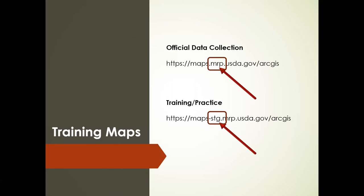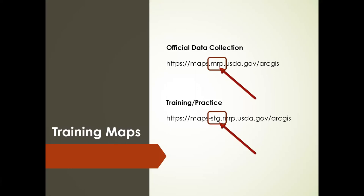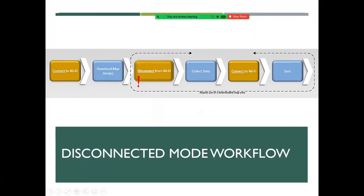The rule you need to remember: training data must only be entered in the training URL in the stage portal, and real data must be in the MRP.usda portal. Just be careful that you don't enter training data in an official data collection portal and vice versa. When in doubt, sign out. There are a couple of clues — all training maps are titled TRAINING in all caps, and training maps also have a boring light gray canvas base map with no imagery. So those are tip-offs, but when in doubt, sign out.